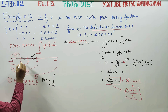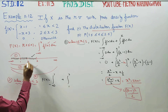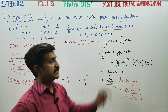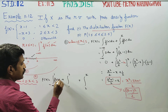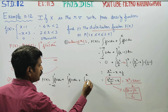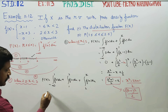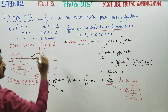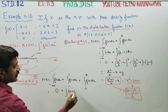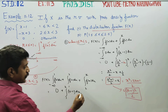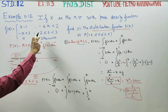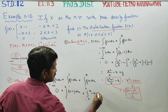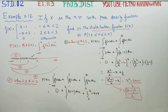For the third interval, the integral is split: minus infinity to 1, plus 1 to 2, plus 2 to x. In the range 1 to 2 the integrand is u minus 1, and from 2 to x the integrand is minus u plus 3.